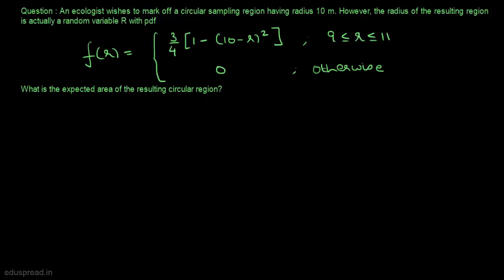In this video, I am going to solve this question. An ecologist wishes to mark off a circular sampling region having radius 10m. However, the radius of the resulting region is actually a random variable r with a given PDF. What is the expected area of the resulting circular region?